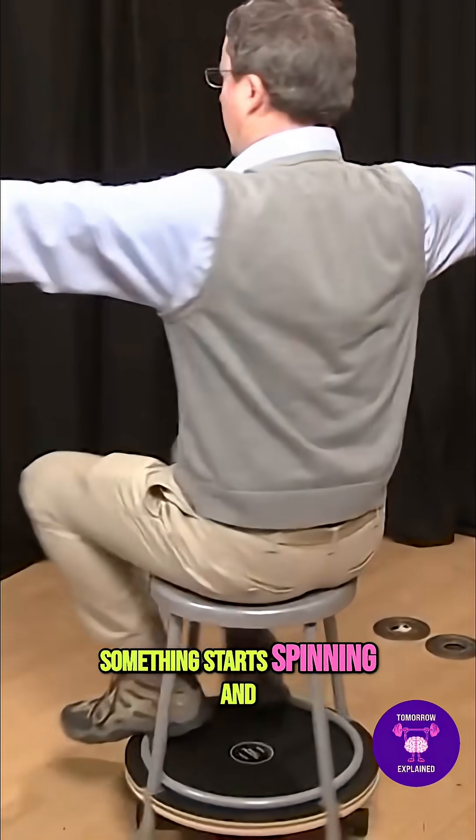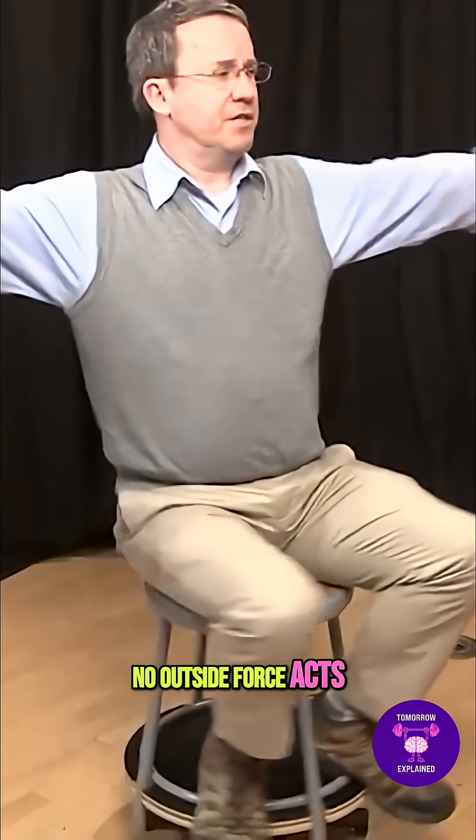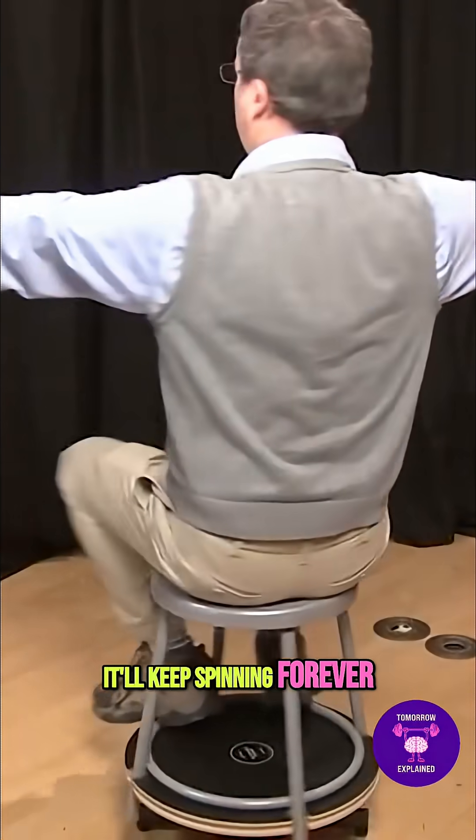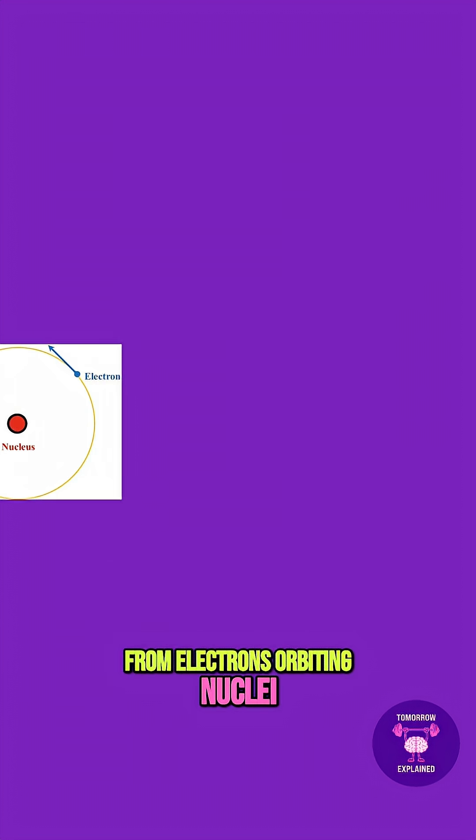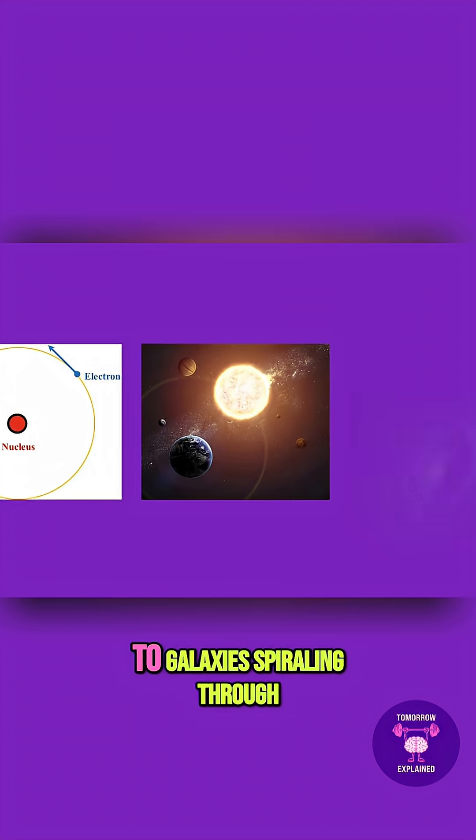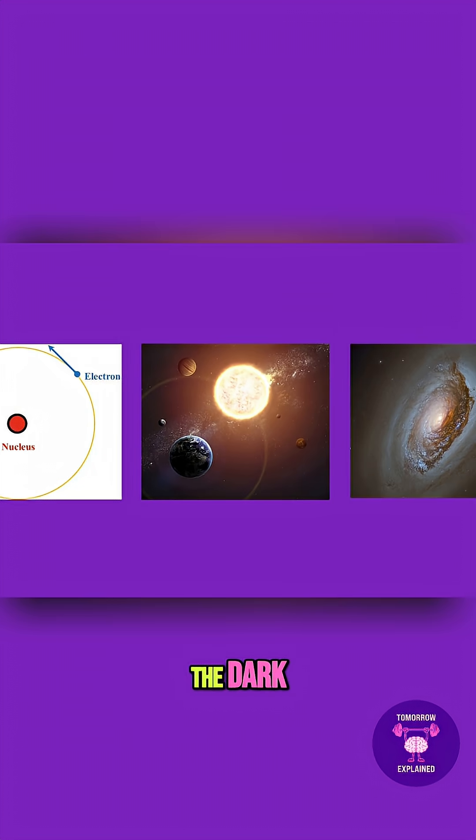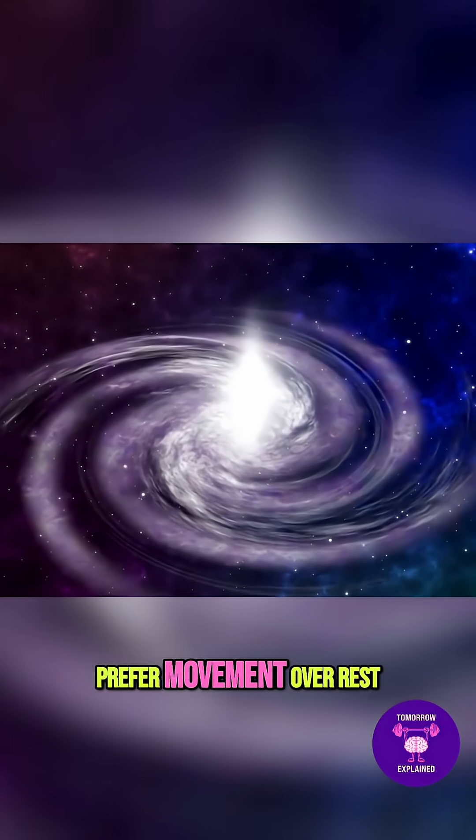It says that if something starts spinning and no outside force acts on it, it'll keep spinning forever. From electrons orbiting nuclei, to planets circling suns, to galaxies spiraling through the dark, the universe seems to prefer movement over rest.